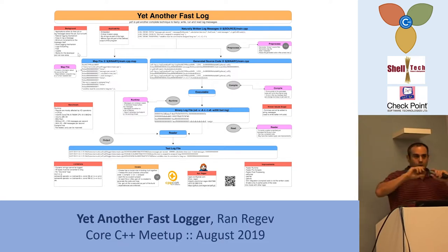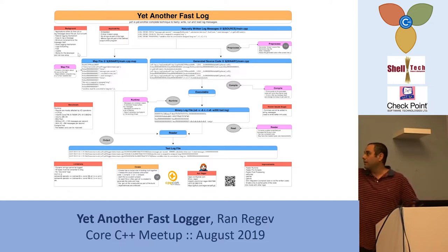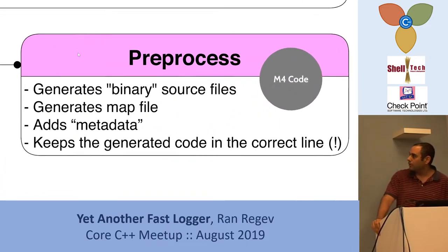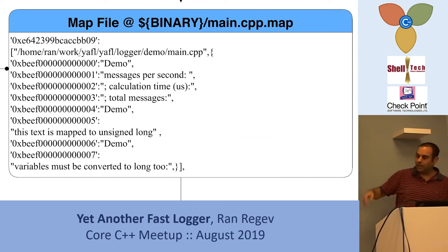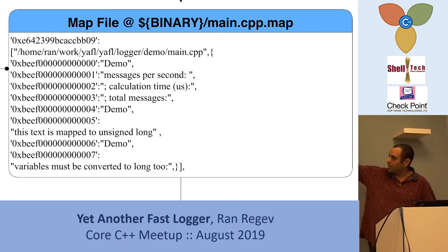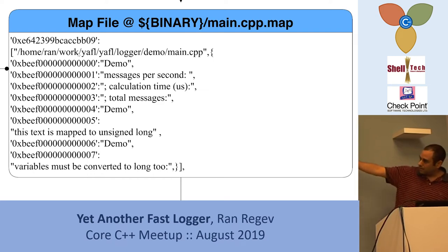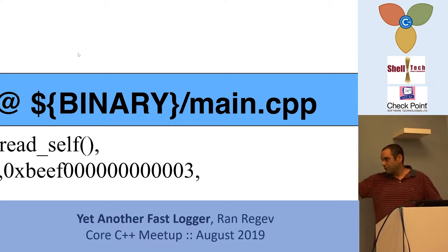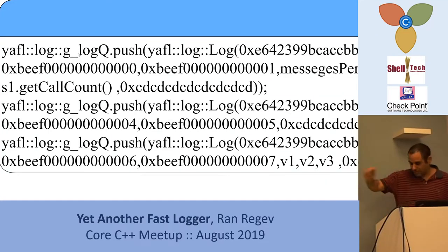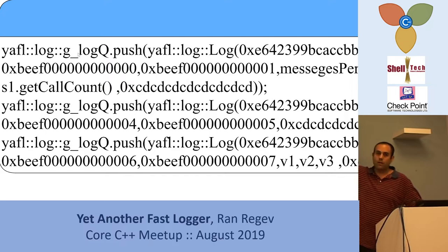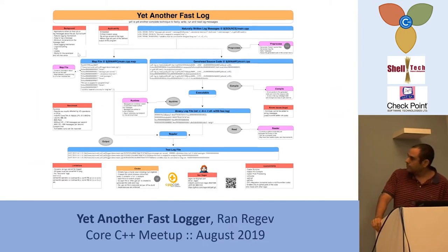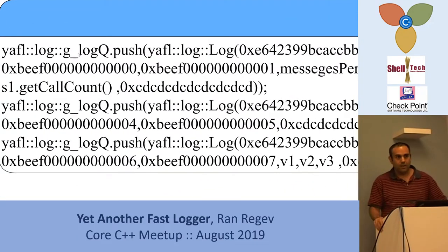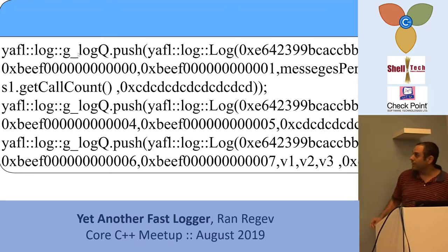The preprocessor takes your normal log message and converts it into two files. One is the source code with binary numbers — you can see a number representing the file name itself, another number representing the string, message per second, and so on. The other is the map file. The code itself is written into the binary area with a message of numbers — everything is a number. We build a log object with all the numbers we want to log. It's just a structure with numbers, and these are the keys to the map.